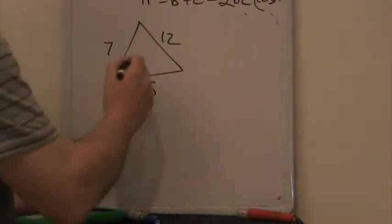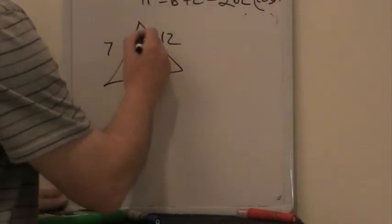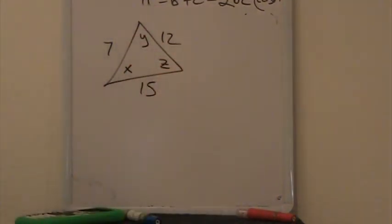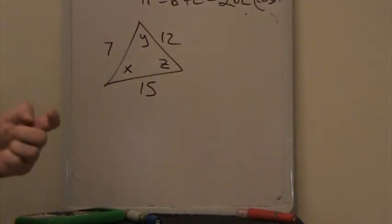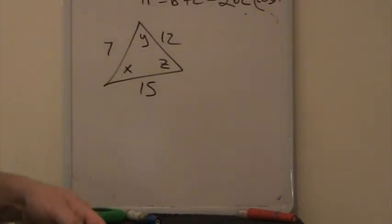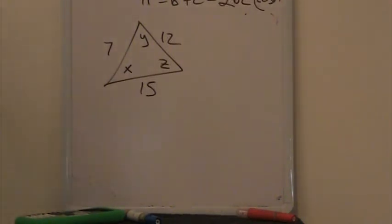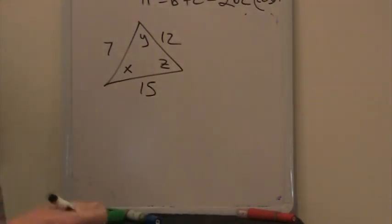And we want to find angles x, y, and z. Also, remember in all these problems guys, with Law of Sines and Cosines, you can't use Pythagorean theorem because there is no hypotenuse. There's no 90-degree angle, there's no hypotenuse.